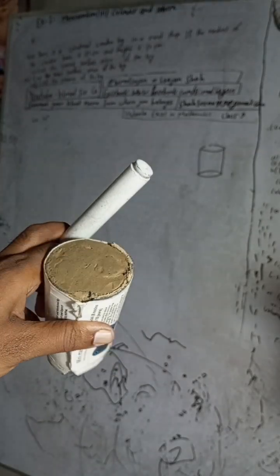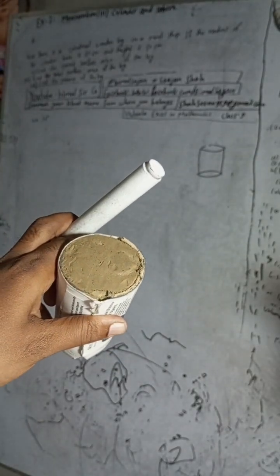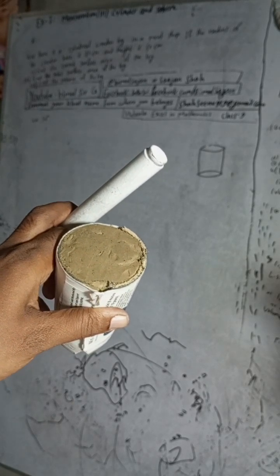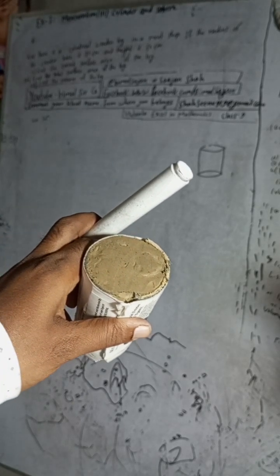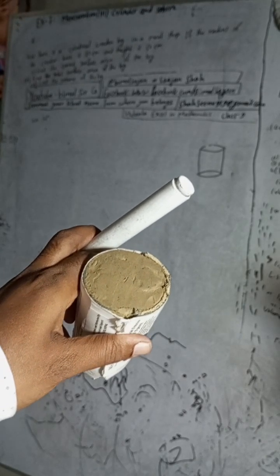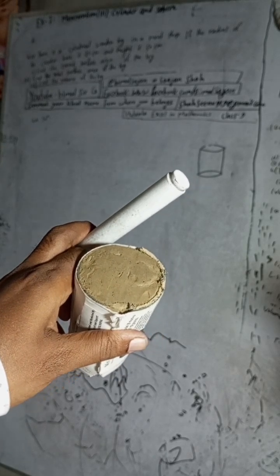Hi class 9 and 10 students, welcome back to Bimal Sarji YouTube channel. This is question number 4a, exercise 7.1, mensuration third part, cylinder and sphere, Vedanth Excel in Mathematics class 9.